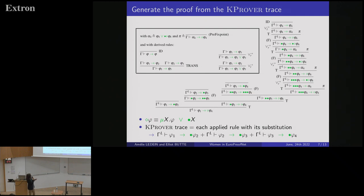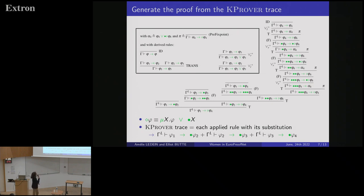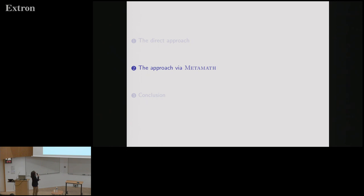To conclude the proof, it seems very long but it's redundant — you use transitivity, framing, transitivity, framing, and so on. So you can define in Dedukti a dependent symbol to generate this automatically according to each judgment. It's a bit difficult because there is a lot of language and many small translations, but it's not too much technically.